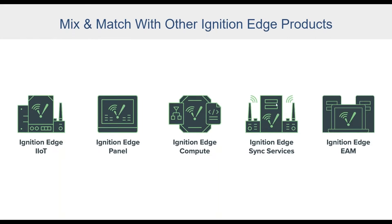The first option is Ignition Edge Sync Services, which allows you to make a gateway network connection up to your central Ignition gateway. The gateway network is Ignition's proprietary ignition-to-ignition protocol, and it will send real-time information, alarm information, and historical data up to that centralized system. If you lose the connection, it buffers data locally and forwards it to backfill your historian once the connection is restored — really powerful in regulated industries where you can't lose data.